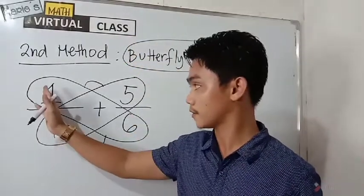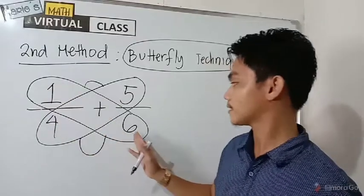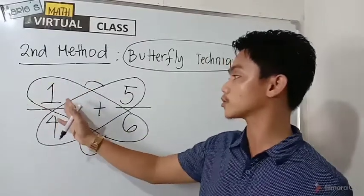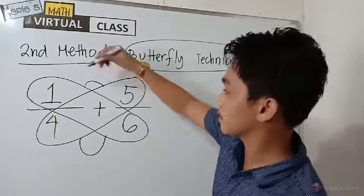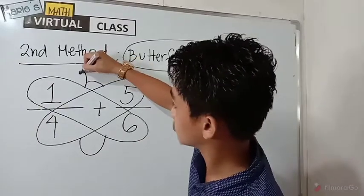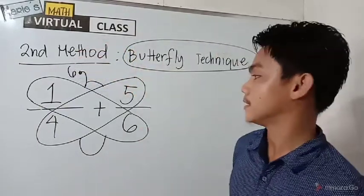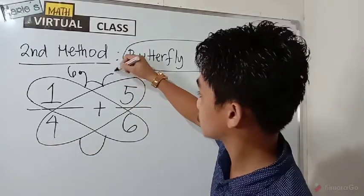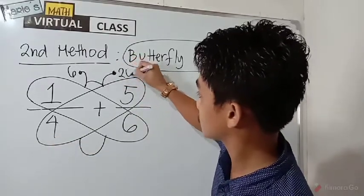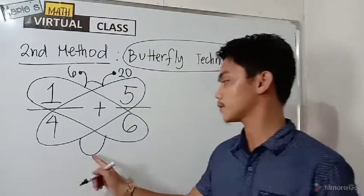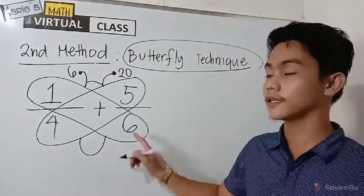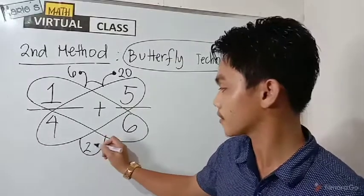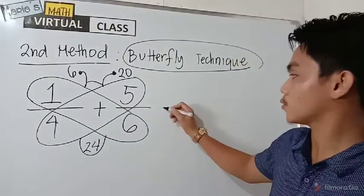So for the antenna, let us have the computation one times six. So this oblong means cross multiplication. One times six is equal to six. And then, four times five is equal to twenty. And then, for its tail, four times six is equal to twenty-four.